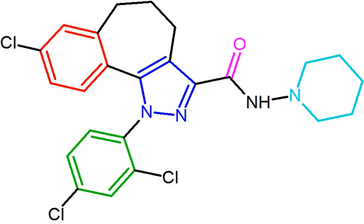The endogenous cannabinoid system includes cannabinoid receptors, their endogenous ligands, endocannabinoids, and enzymes for their synthesis and degradation. There are two main receptor types: cannabinoid receptor 1, CB1, and 2, CB2. Both receptors are 7-transmembrane G-protein coupled receptors, GPCRs, which inhibit the accumulation of cyclic adenosine monophosphate within cells. CB1 receptors are present in highest concentration in the brain but can also be found in the periphery. CB2 receptors are mostly located in the immune and hematopoietic systems. Endocannabinoids act as agonists for cannabinoid receptors and occur naturally in the body.